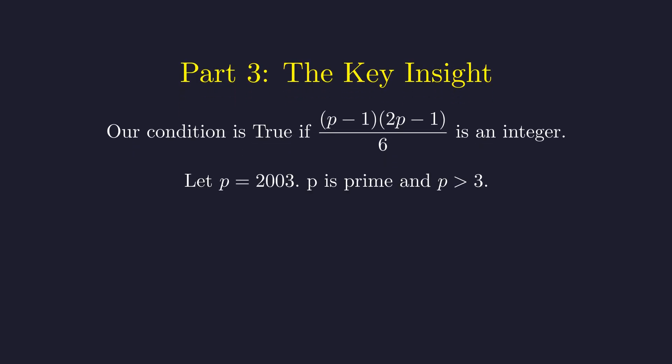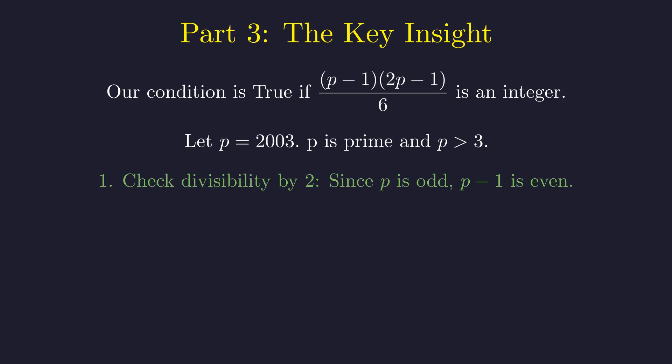Since 2003 is a prime greater than 3, we'll prove our result for any prime p greater than 3. First, we check divisibility by 2. Any prime greater than 2 is odd, so p minus 1 is always even. This means the numerator has a factor of 2.